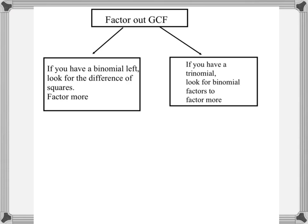The process we're going to use to factor an expression completely: the first thing we're going to do is factor out a GCF. Then we're going to be left with two decisions. If we have a binomial left, we're going to look for the difference of squares — if it is the difference of squares, we can factor more; if not, we stop. If we have a trinomial, we look for binomial factors to factor more.